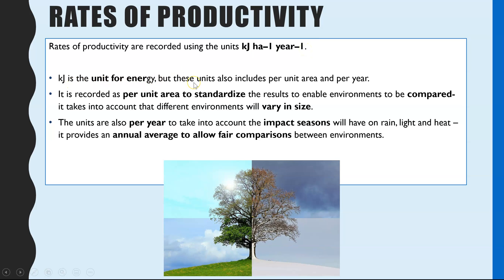Kilojoules is the unit for energy — since rates of productivity measure how much energy is entering the food chain. Per hectare represents an area, and we must divide by the unit area being studied to standardise results. It would not be a fair comparison to look at productivity in a very small field versus an entire rainforest, so dividing by area standardises the results and allows fair comparison.